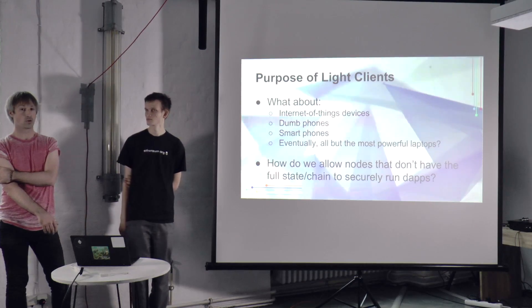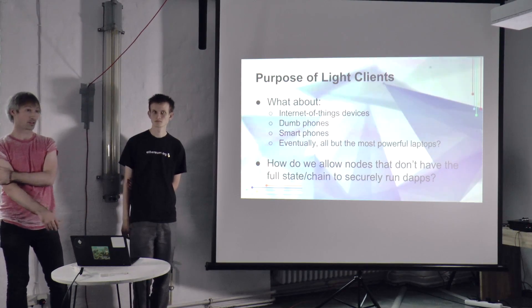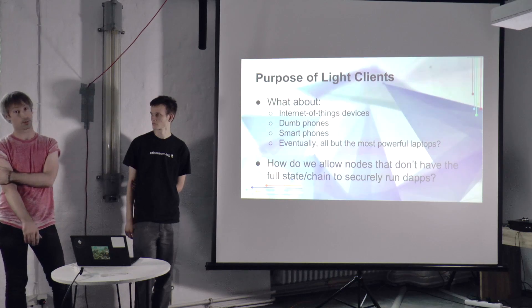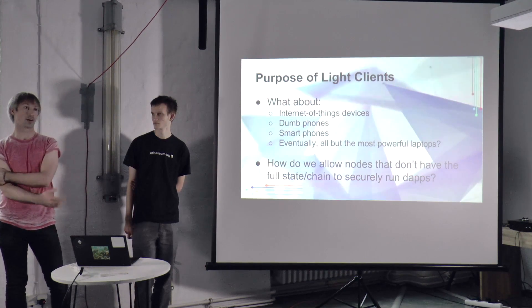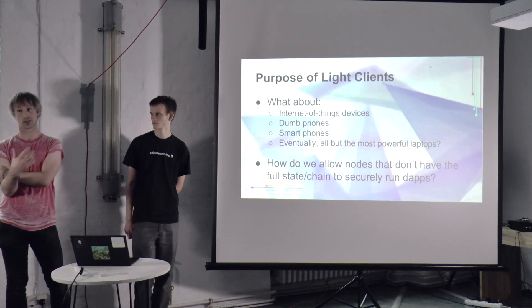So we have two problems. The first is: given that a lite client knows very little about the blockchain, because it stores very little — probably only the headers — how does it find out about events going on in the blockchain that the decentralized application might be interested in? The second is: assuming it now knows about these events — perhaps it's a transaction, perhaps it's a particular execution of a particular contract — how does it be certain that this information is actually true?